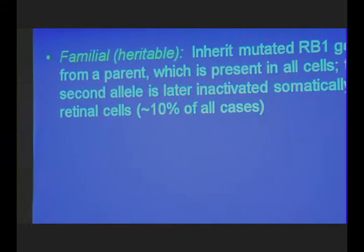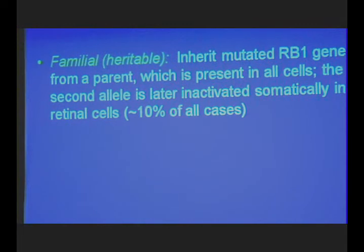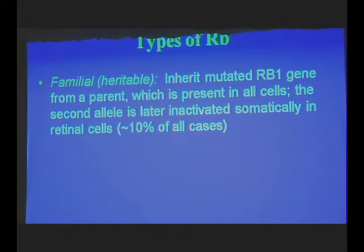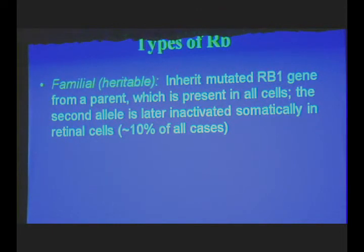This is a slightly technical part, but it's important to my observations. There are three types of retinoblastoma. The first type is called familial retinoblastoma, and it's heritable. The child inherits a mutated gene from the parent, which is present in all cells, and then the second allele is later inactivated somatically in the retinal cell. This accounts for about 10% of all cases of retinoblastoma.